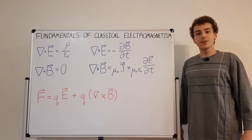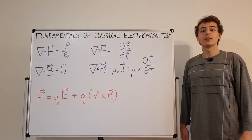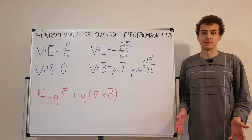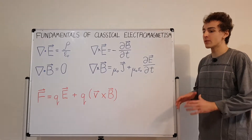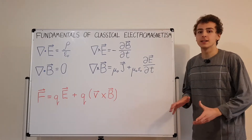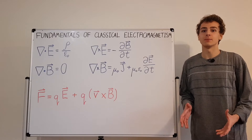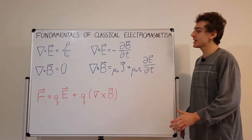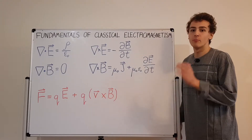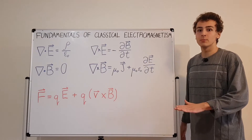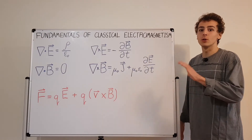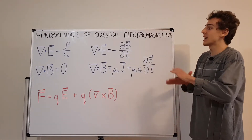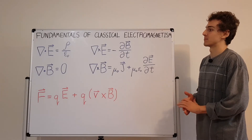In this video I'm going to talk about the fundamentals of classical electromagnetism. What are the fundamental things that you need to describe all of electromagnetism in the classical sense? You actually just need five big equations. They're the building blocks of all of classical electrodynamics and the understanding of classical electromagnetism.